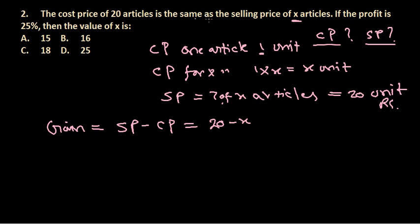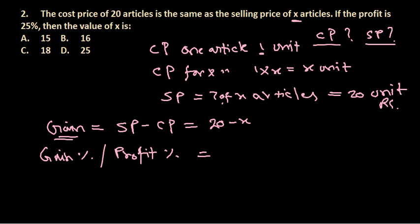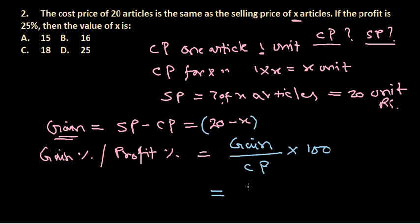The problem tells us the profit percentage is 25%. Gain percent equals (gain / cost price) × 100. Substituting, gain is 20 minus X and cost price is X, so gain percent = ((20 − X) / X) × 100.